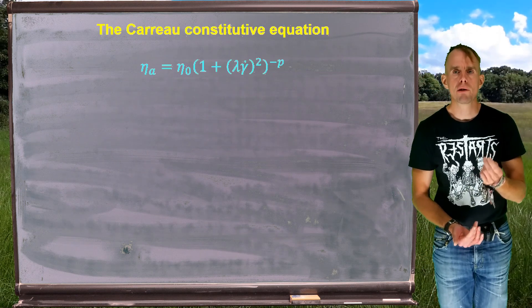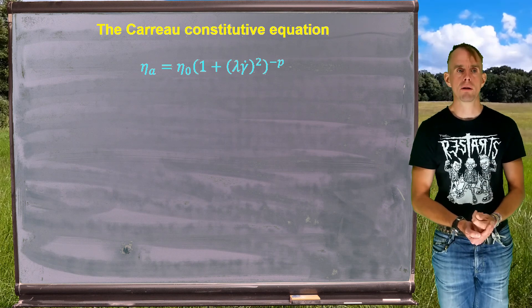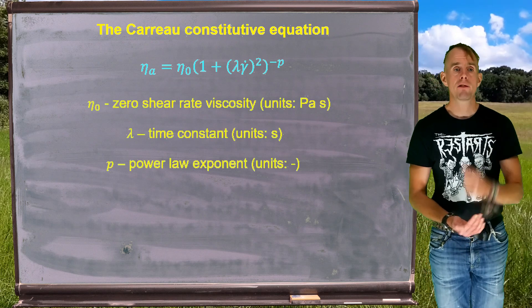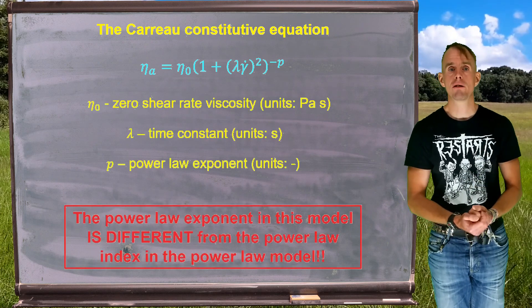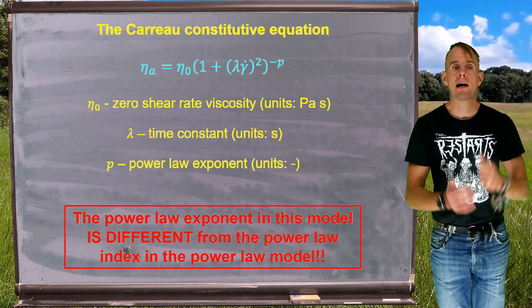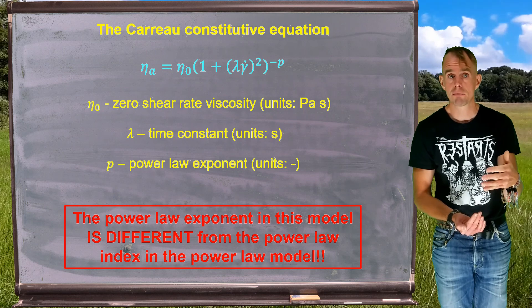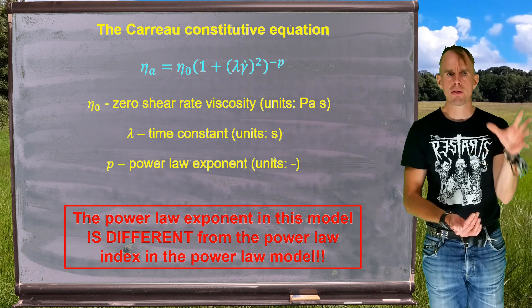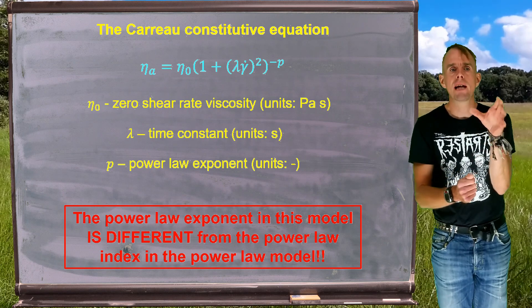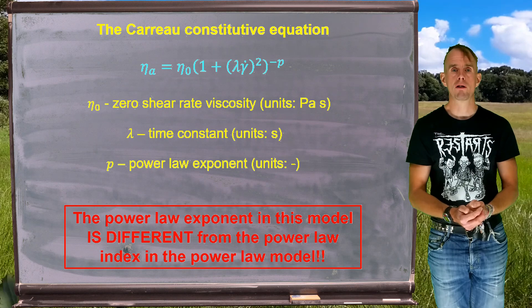So let's look at the next most simplest generalized Newtonian constitutive equation, which is the Carreau constitutive equation. There on the blackboard, you have the Carreau model. Our apparent viscosity, eta_a, is equal to eta_zero, which is a plateau viscosity, and then a sum of terms involving a relaxation time and a shear rate, both raised to the power 2, with the whole 1 plus lambda gamma dot squared raised to another power minus p. So eta_zero, that's your low shear rate Newtonian plateau viscosity in pascal seconds. Lambda here is effectively a time constant. If we think about the terms inside that bracket, we've got a 1, which is dimensionless, plus a quantity squared, which also has to be dimensionless. So we know that gamma dot goes with reciprocal seconds as units, so therefore lambda has to have units of seconds. P here is a power law exponent, which is again dimensionless.